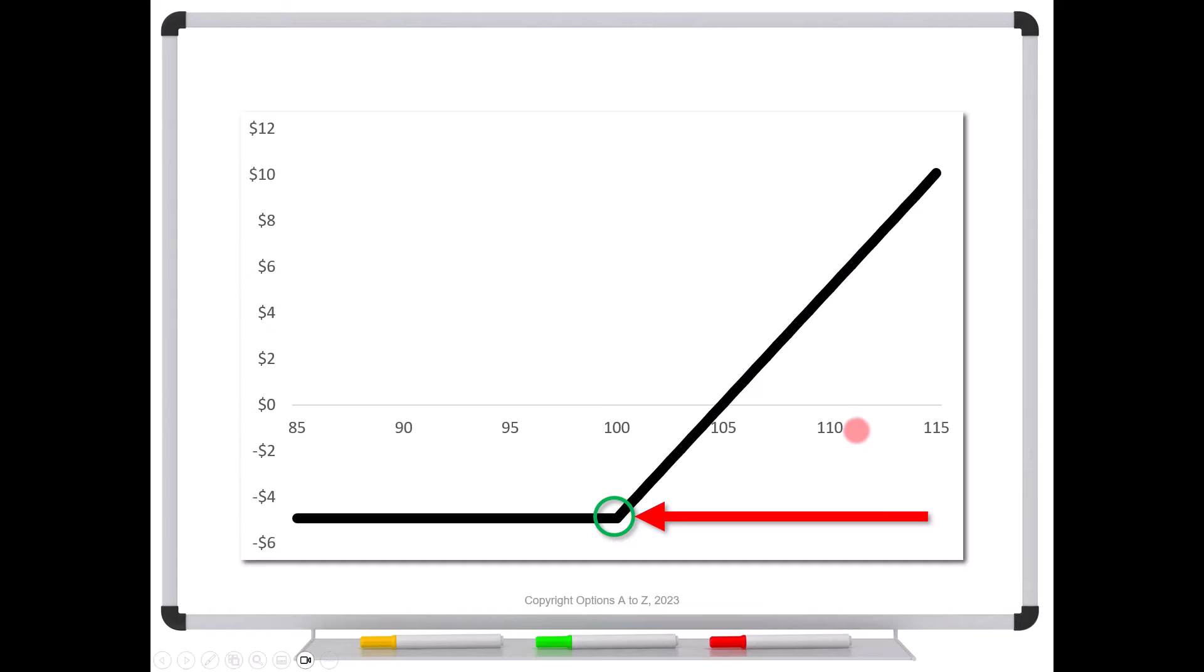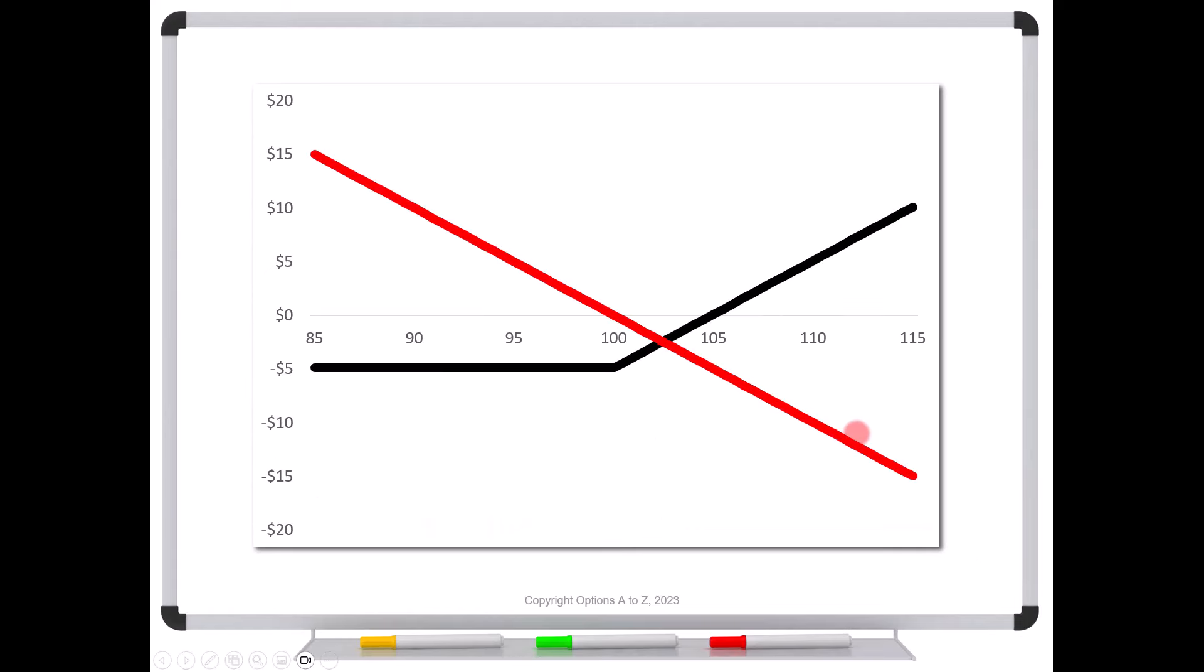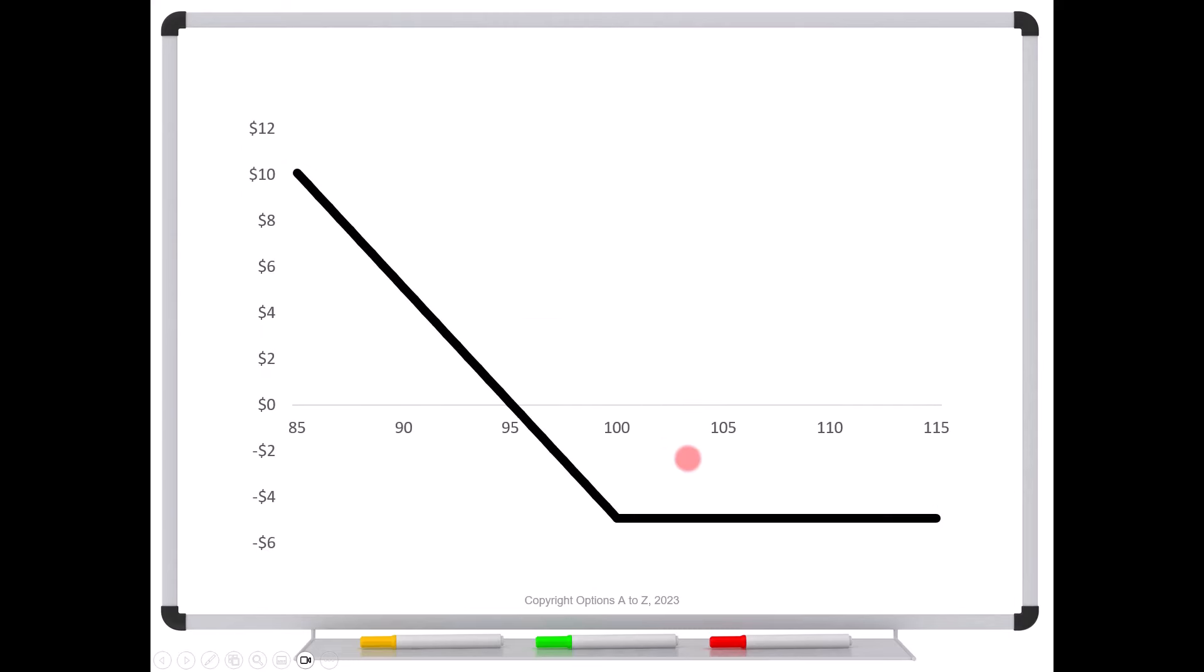So I've got a call option here. If I shorted shares of stock against it, then we go to this. We have short shares of stock plus the call, and that's going to do what? Create a put.